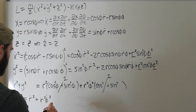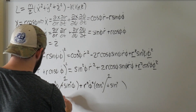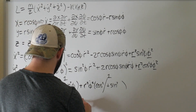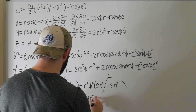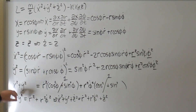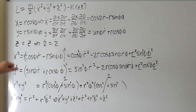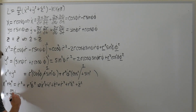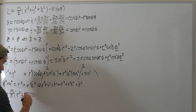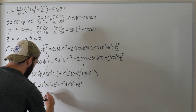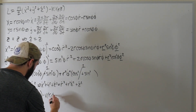This tells us that x_dot² + y_dot² + z_dot² equals r_dot² + r² φ_dot² + z_dot² — the z_dot term didn't change. Now we're finally ready to write down the Lagrangian in cylindrical coordinates: L equals m over 2 times (r_dot² + r² φ_dot² + z_dot²) minus V(r, φ, z).